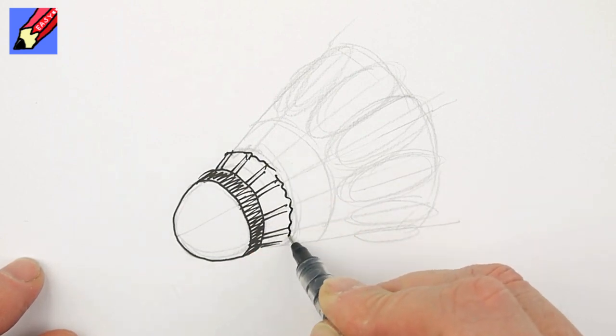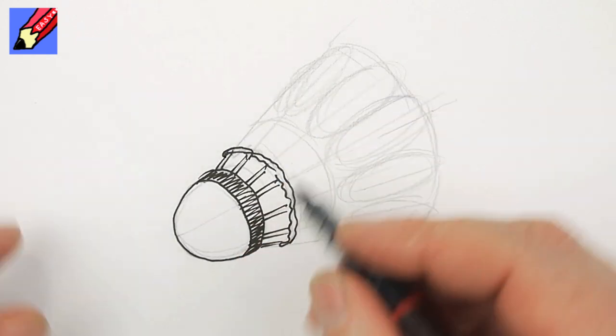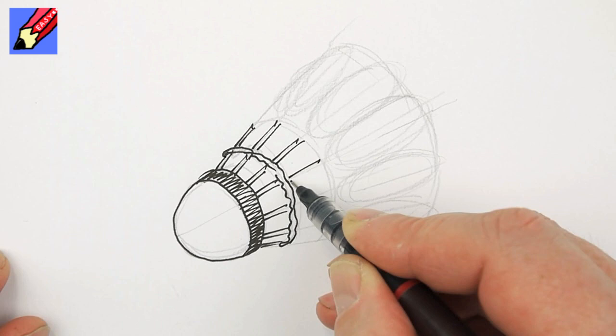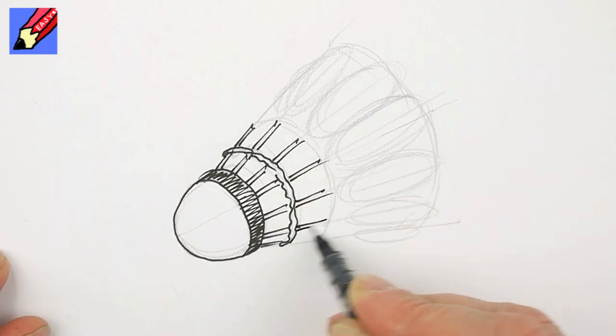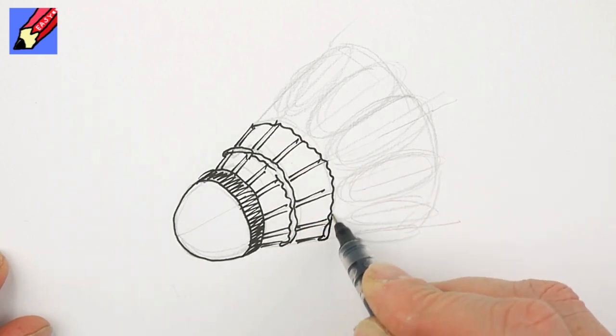And then you've got a kind of wiggly bit because it's kind of string that's wrapped around it. Then you're going to want to do the next bits coming out like that and again wiggly wiggly wiggly around that line. Wiggly wiggly wiggly.